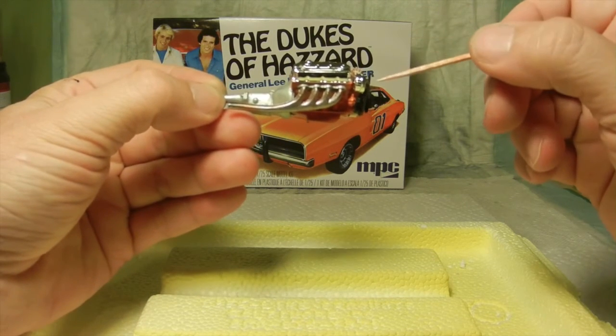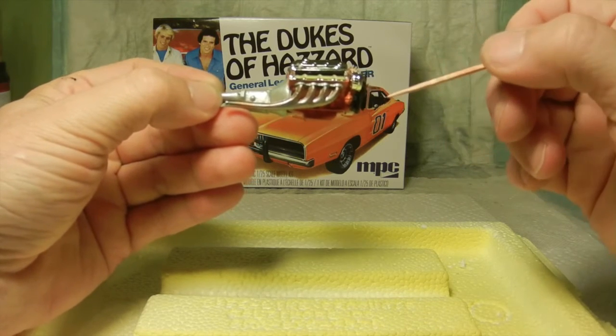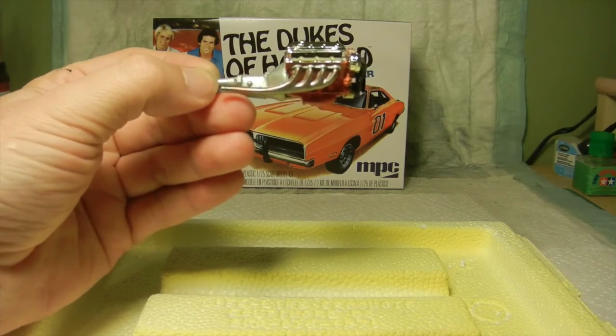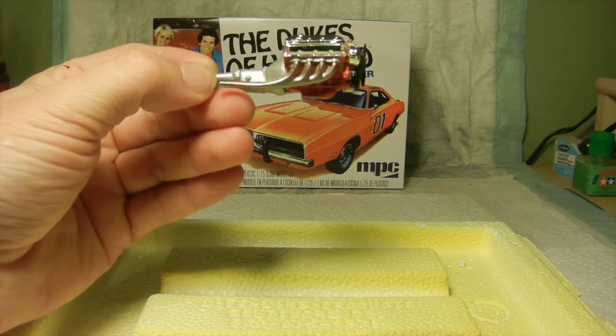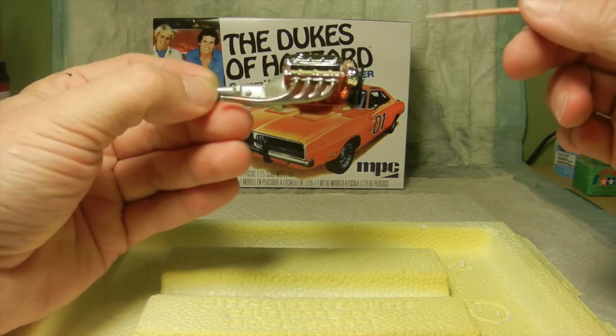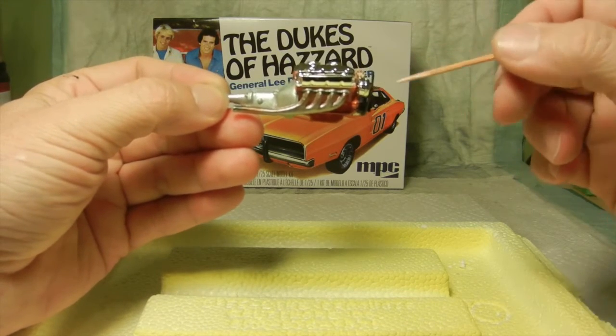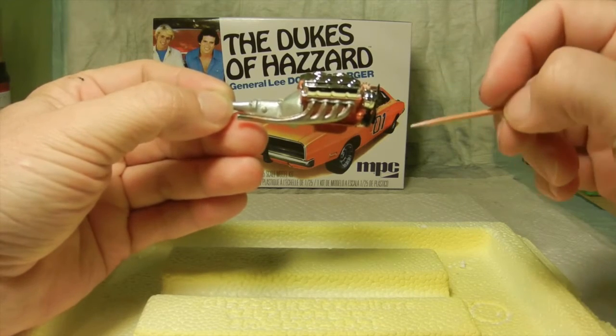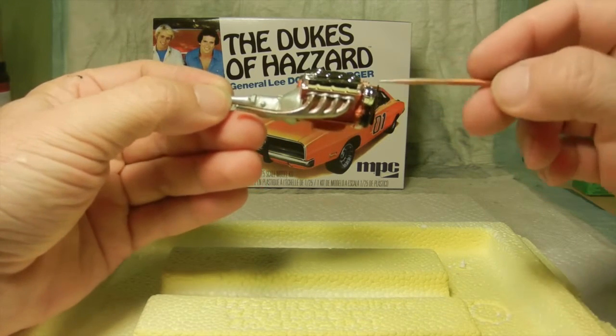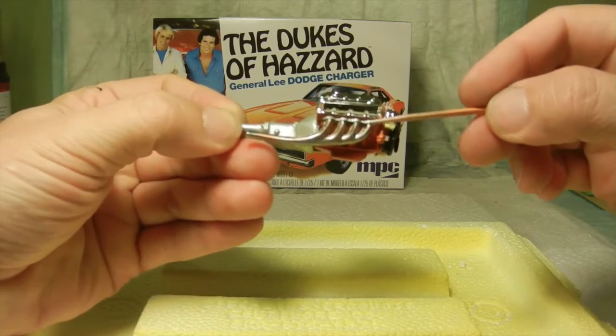And then I went ahead and took some Tamiya colors. I took the copper XF-6 and just lightly dry brushed it around the pipes, along with the Tamiya gunmetal X-10. And then I just used my heat gun to dry in between the colors.